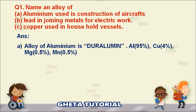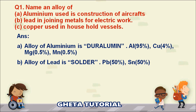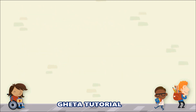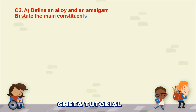Duralumin is used in the construction of aircraft. The second alloy is solder, used in joining metals for electrical work. Solder consists of lead 50% and tin 50%. The third alloy is brass, used in household vessels. Brass is an alloy of copper — copper 80% and zinc 20%.